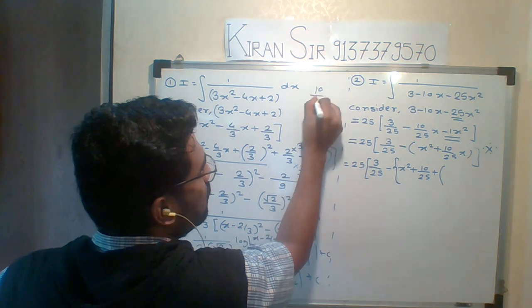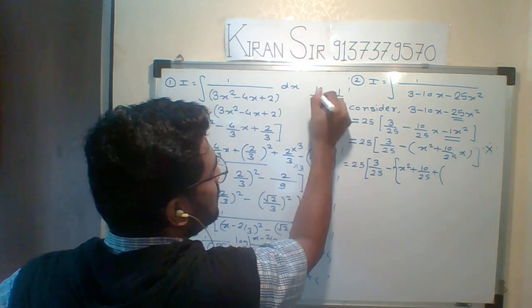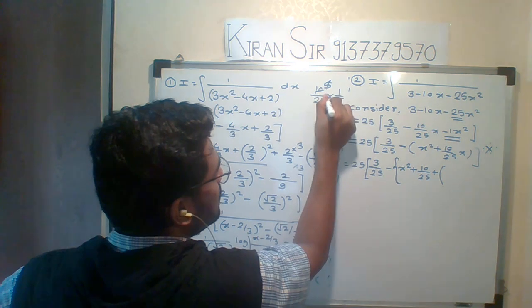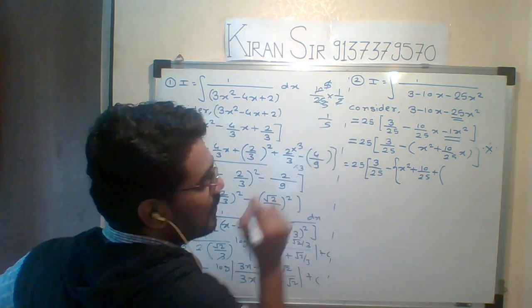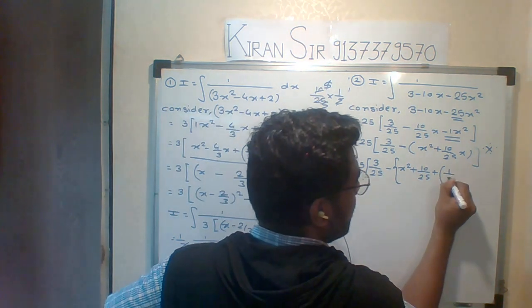How much? Tell me. 10 upon 25. 2 into 5 is 10, so it's 2 by 5. Half of 2 by 5 is 1 by 5. So 1 by 5 I have added.